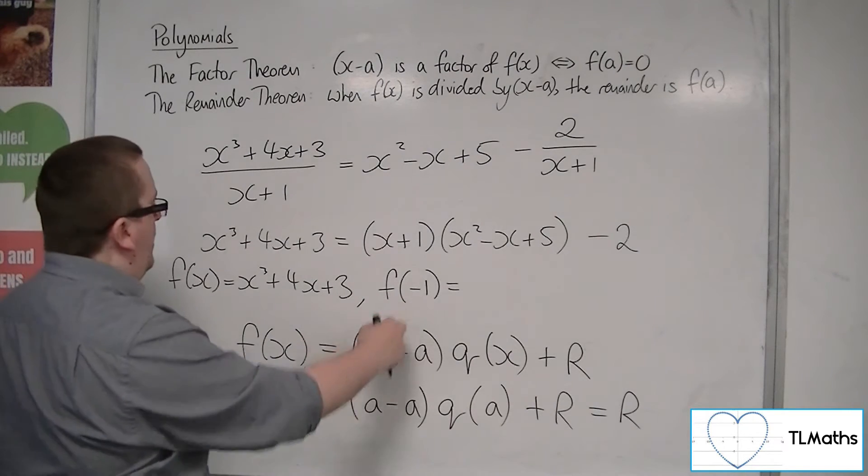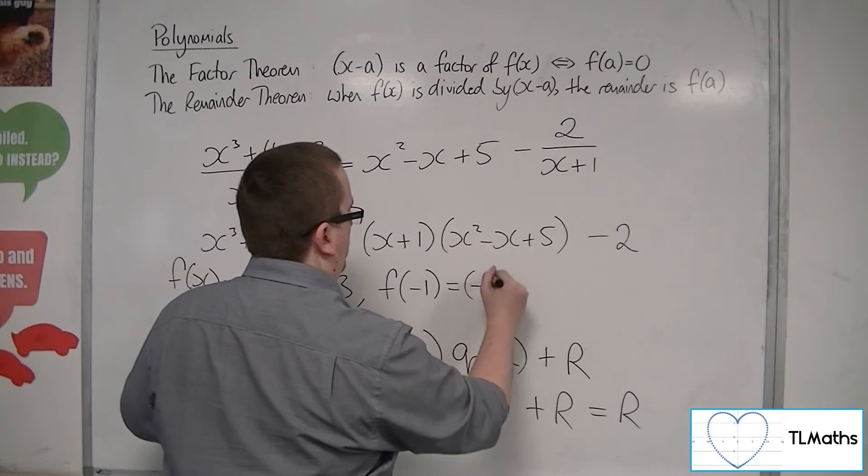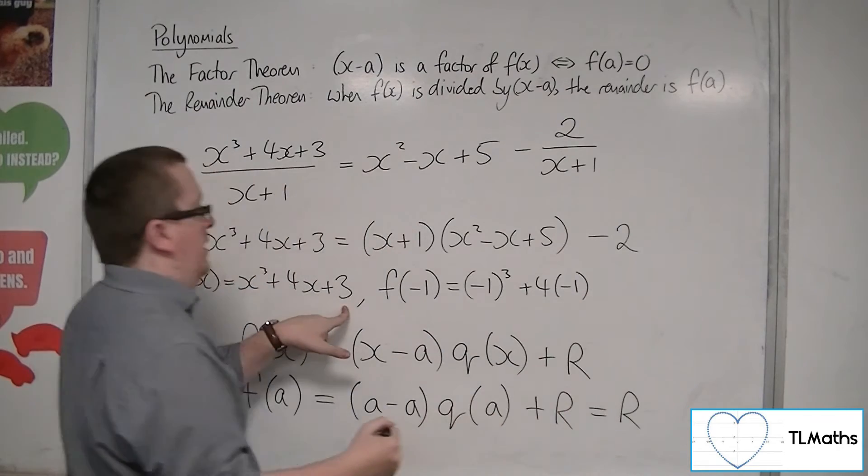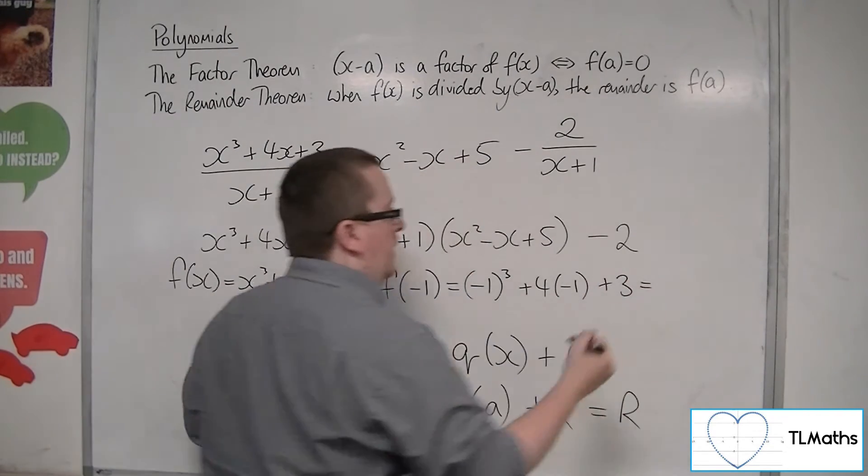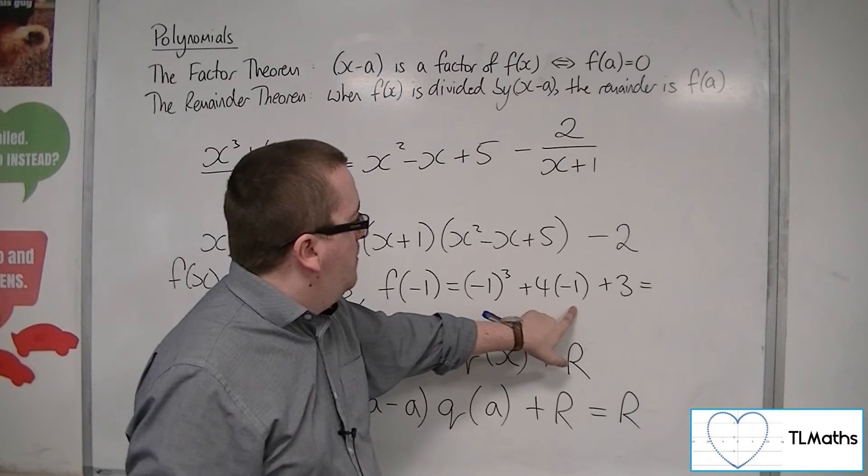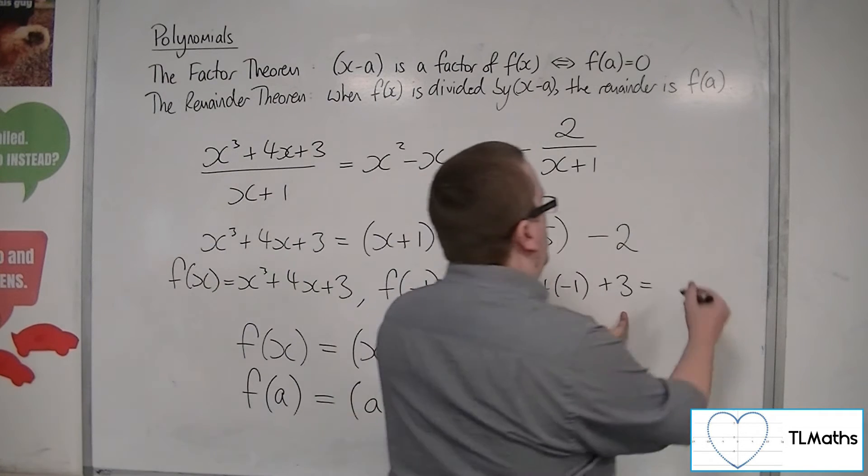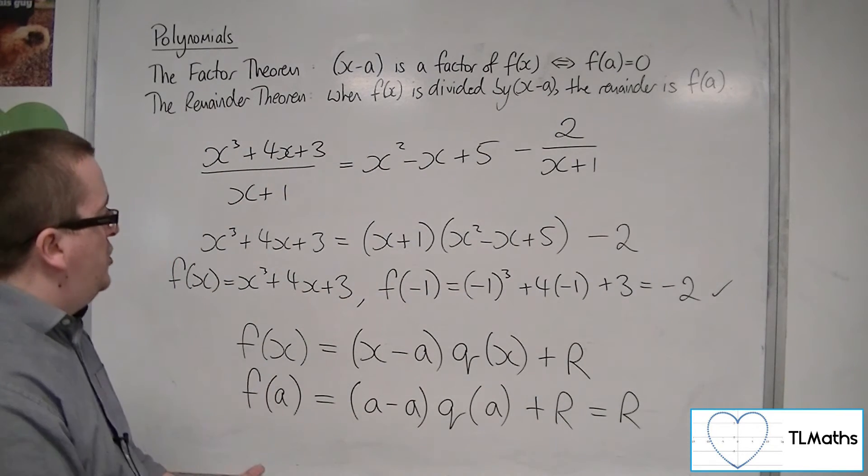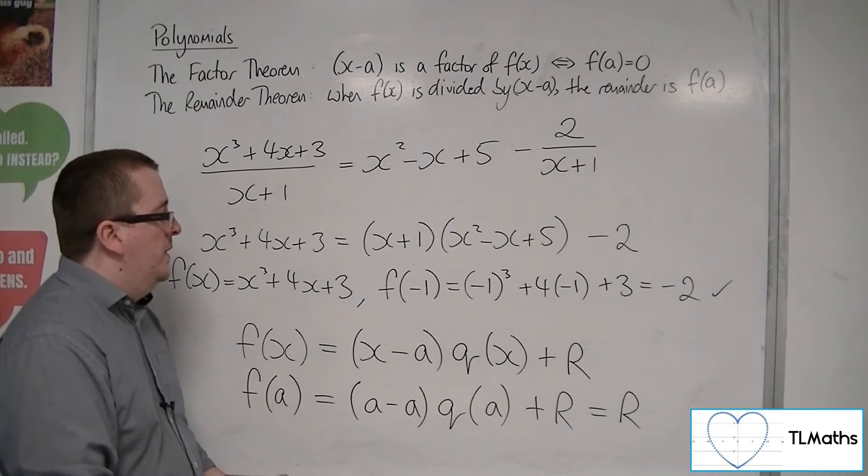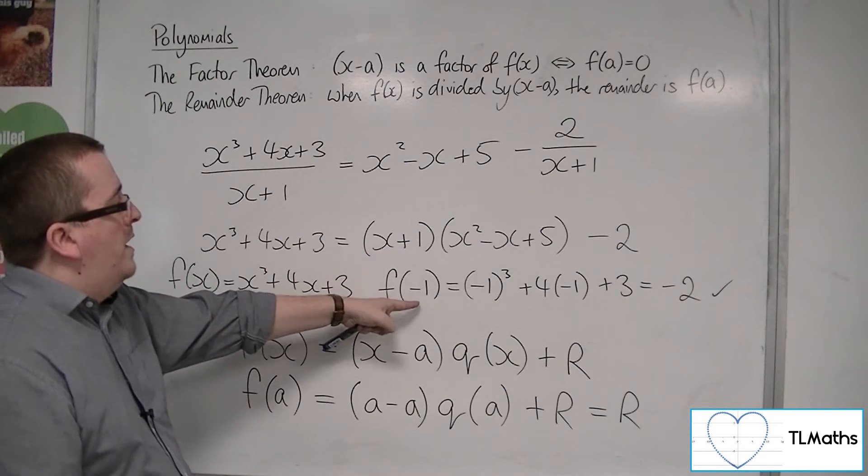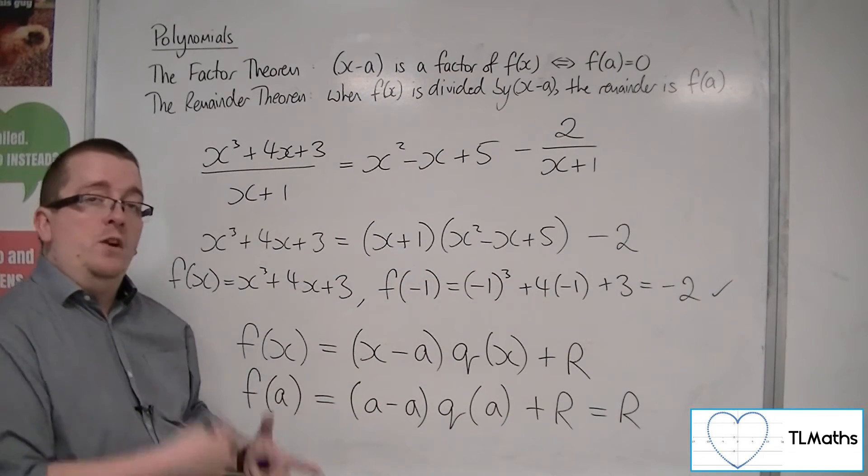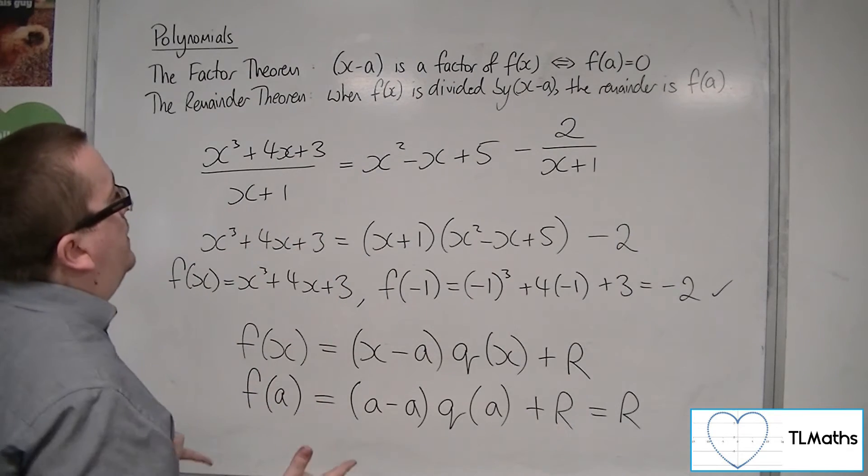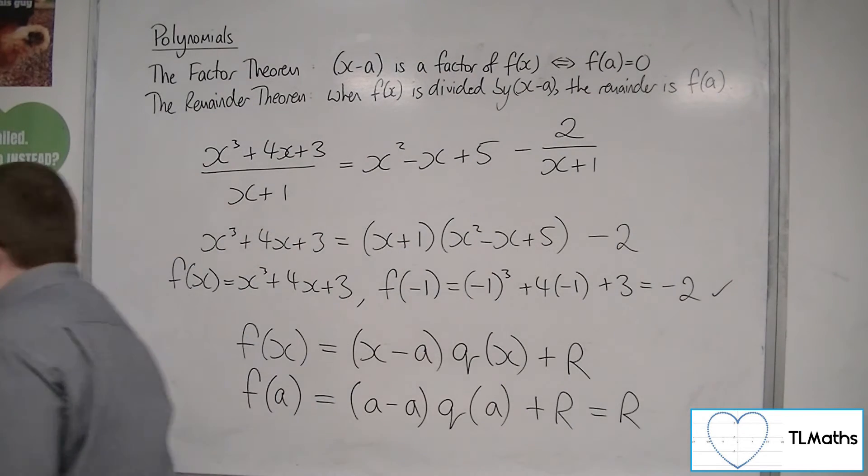So f of minus 1 is minus 1 cubed plus 4 lots of minus 1 plus 3. So we get minus 1, take away 4, so minus 5, plus 3, which is minus 2. Minus 2 was the remainder. So clearly, just substituting in that value, where the a is minus 1, I can find the remainder directly without having to do polynomial division. So this is the remainder theorem. That's what's working behind the scenes.